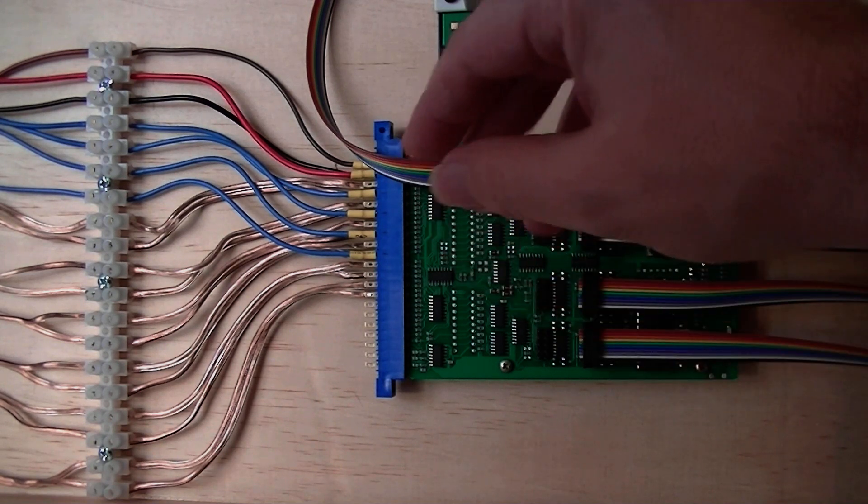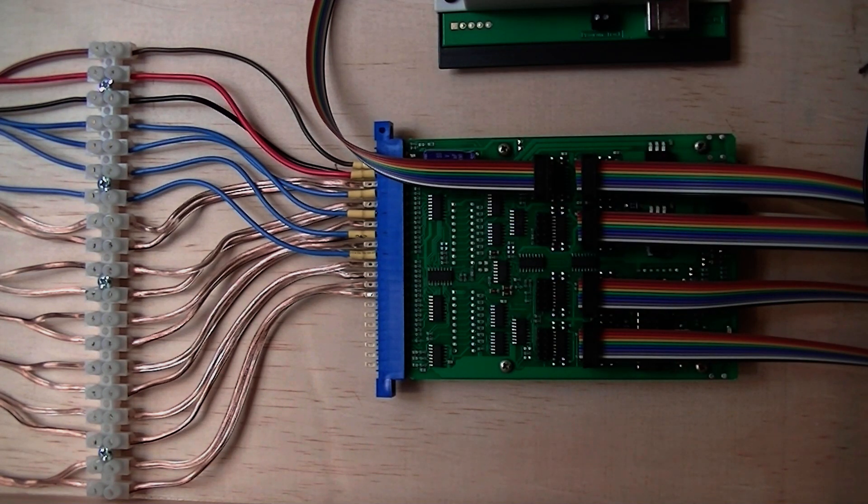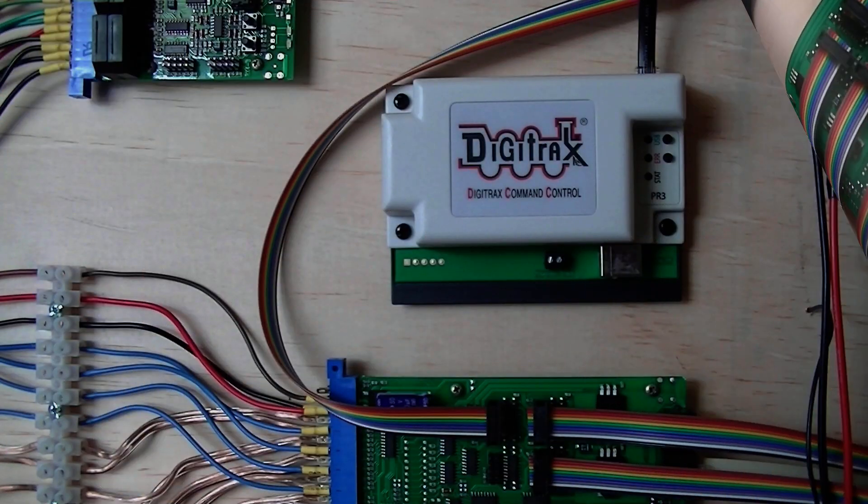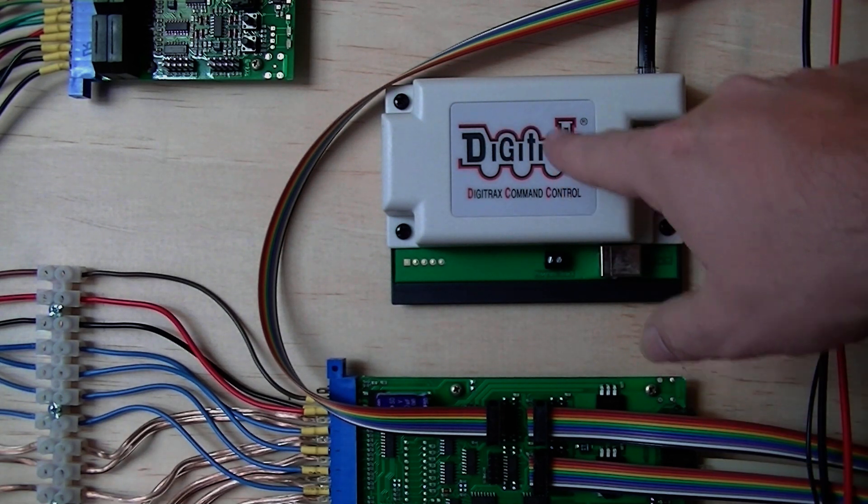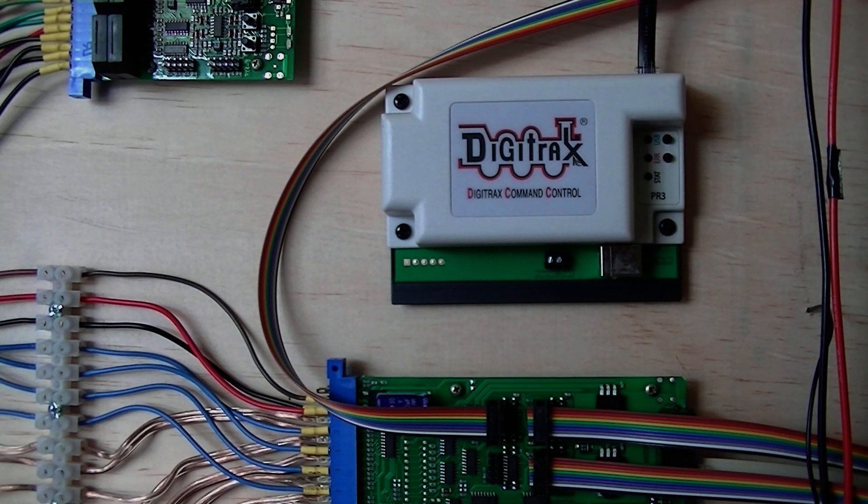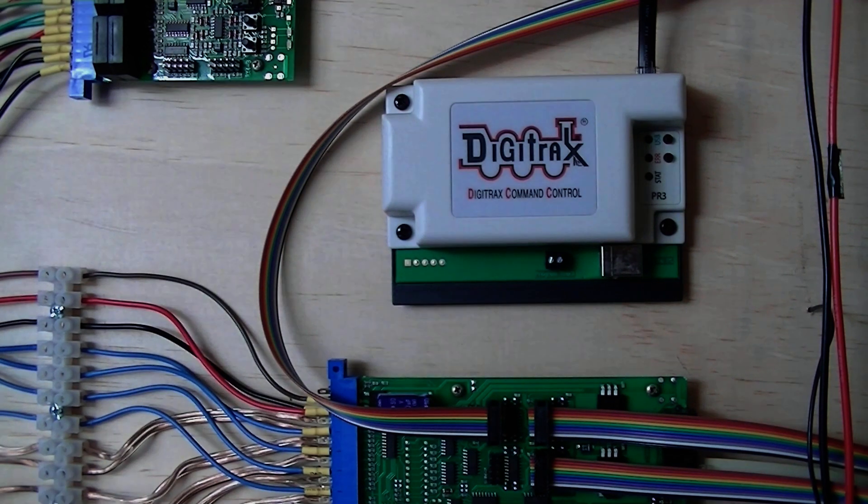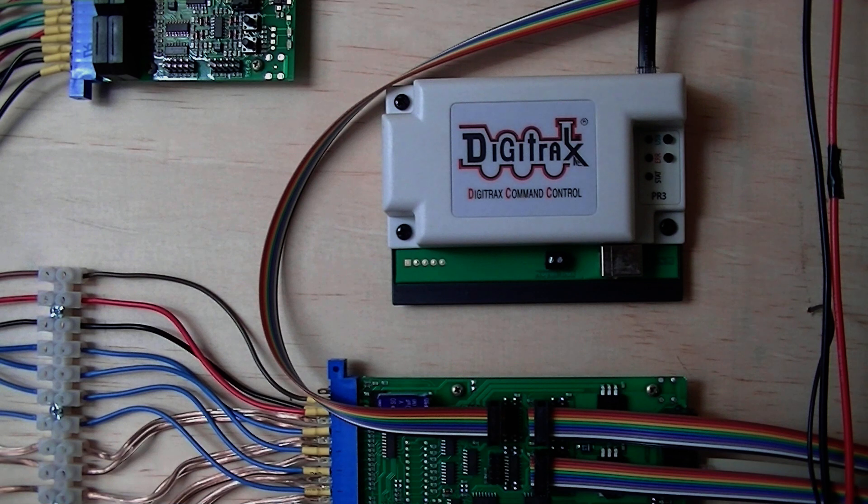The signal lights are all wired up now and working correctly. So where to now? I need to start plugging the PR3 to the laptop and I'm considering what software I'm going to buy to start automating this layout. The next video is going to be an interface between the layout and the computer. I guess that's the end of this video, so thanks for watching.